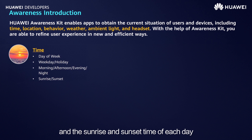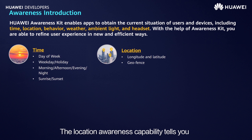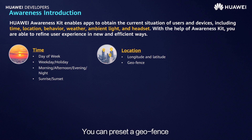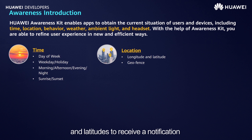Awareness Kit also provides the sunrise and sunset time of each day. The Location Awareness Capability tells you the longitude and latitude of a user. You can preset a geofence by specifying coordinates and radius to receive a notification whenever a user enters or leaves the geofence.